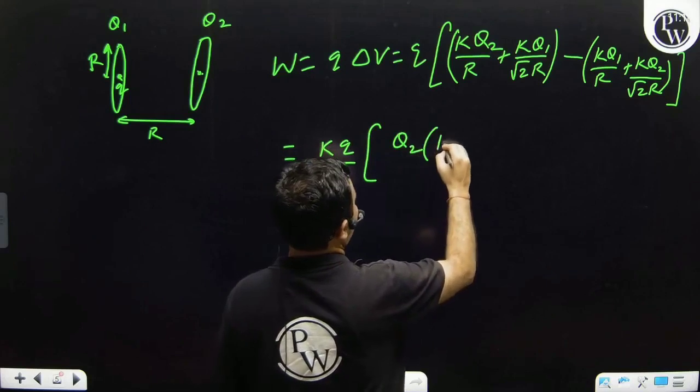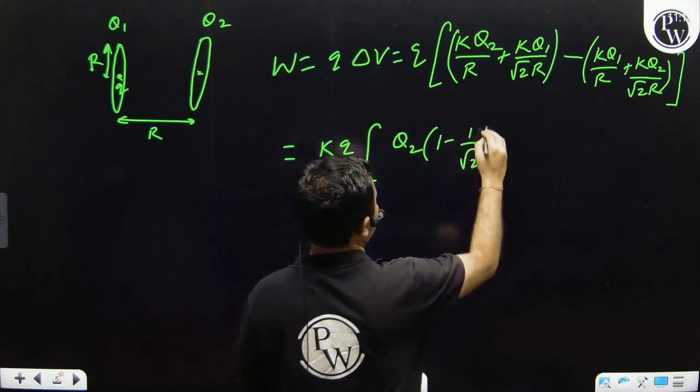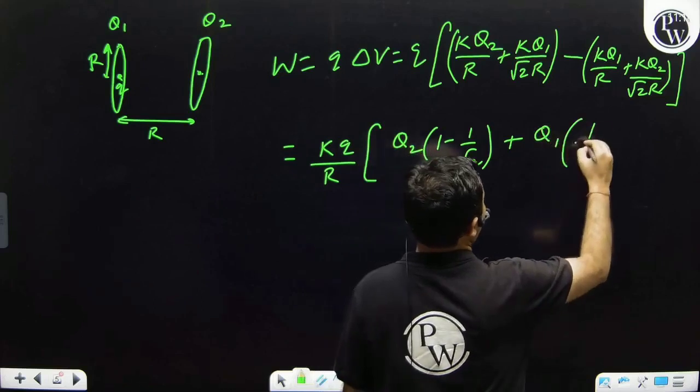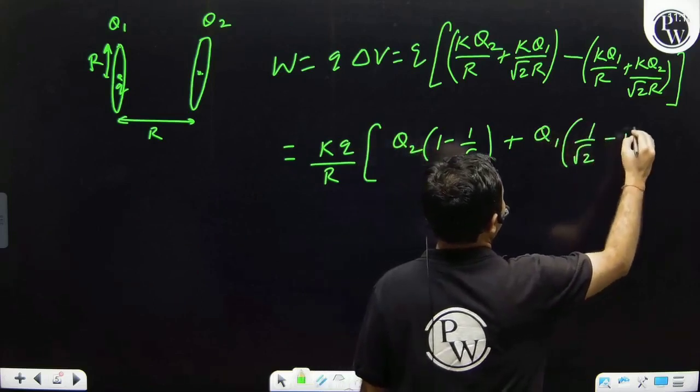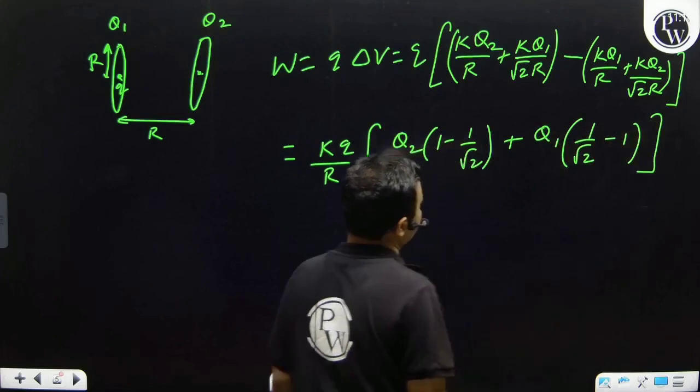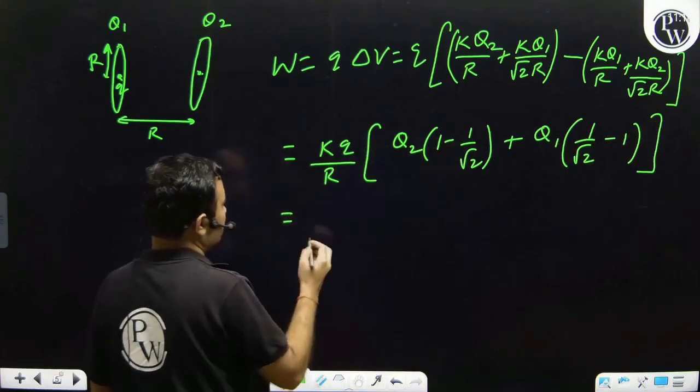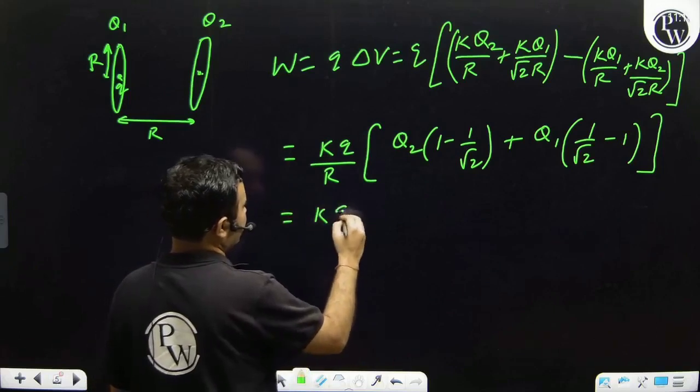K Q2 by R minus K Q1 by R plus K Q1 by root 2 R minus K Q2 by root 2 R.